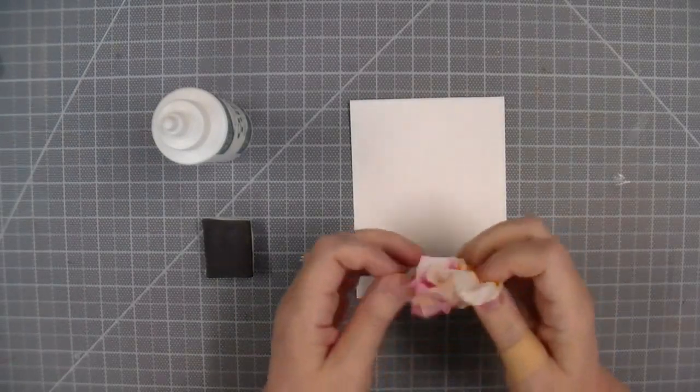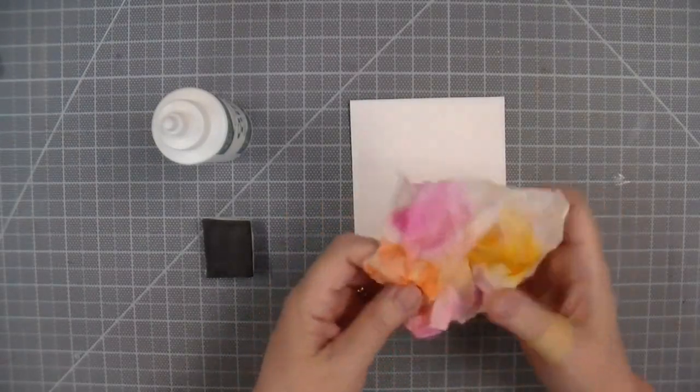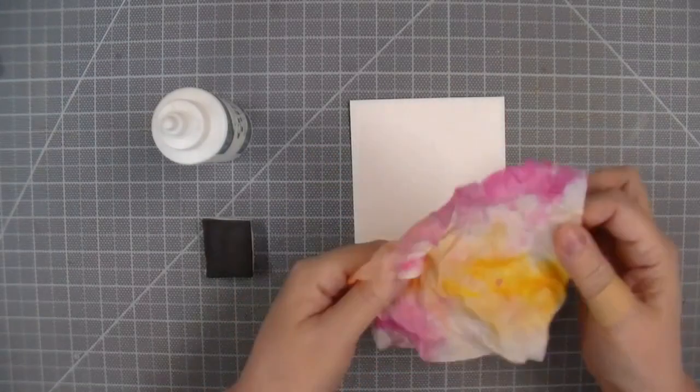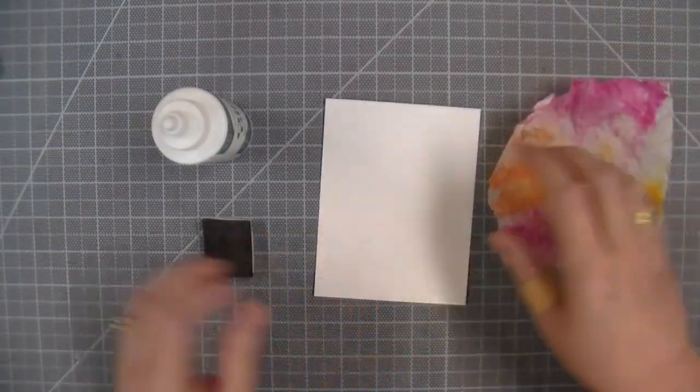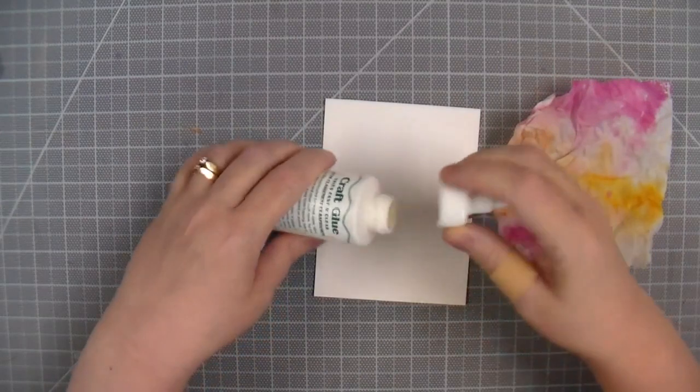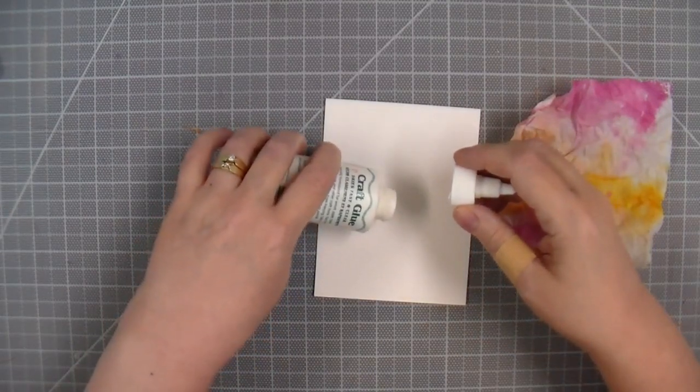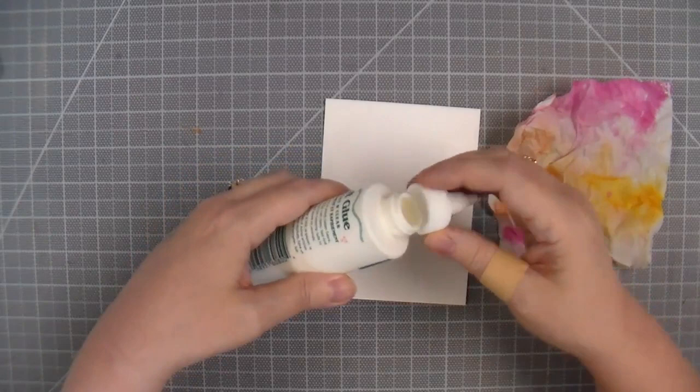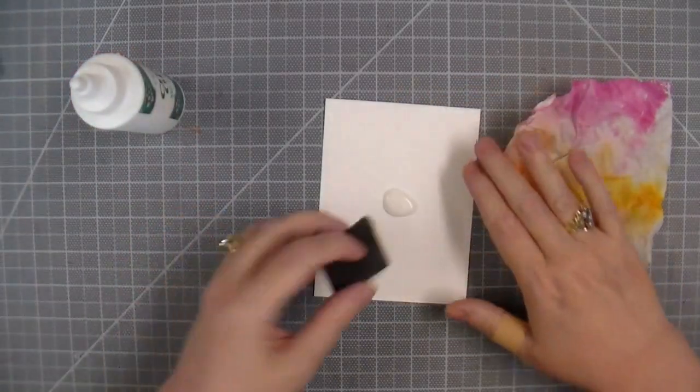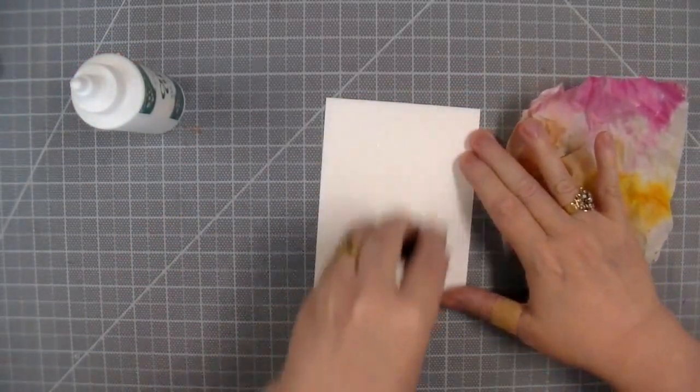I'm just crumpling one up, and I'm opening it up, and you'll see the tissue paper has lots of texture on it with all its crinkles and creases. I'm going to take some inexpensive craft glue and put some onto a piece of white cardstock, and then spread it with a sponge to cover the entire surface of the cardstock.